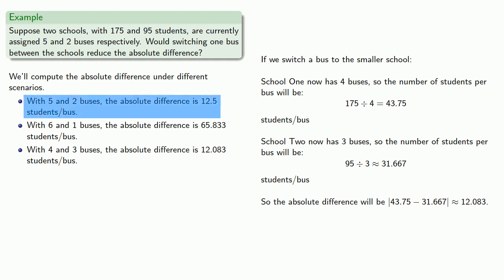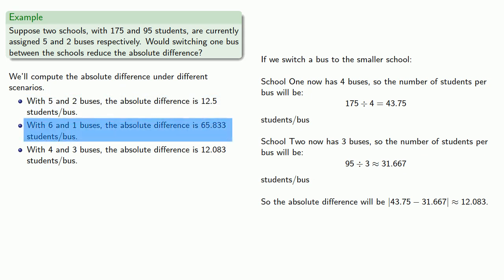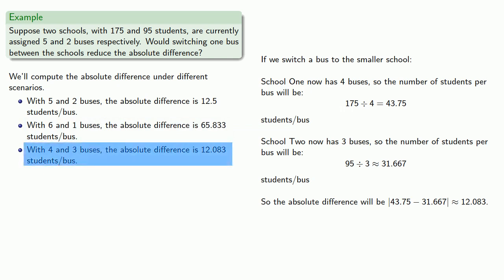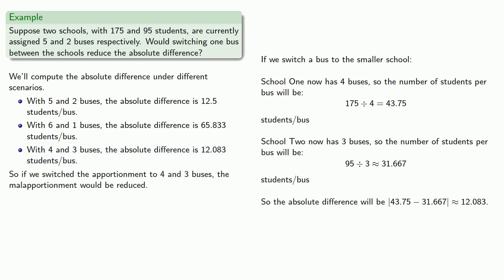Now let's consider our three scenarios. Currently we have an absolute difference of 12.5. If we move a bus to the larger school, that actually increases the absolute difference and makes the malapportionment worse. But if we switch the bus to the smaller school, that decreases the absolute difference and makes the malapportionment less. So if we switch the apportionment to four and three buses, the malapportionment would be reduced.